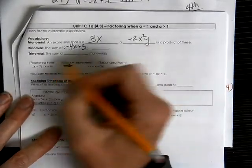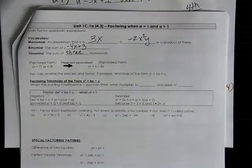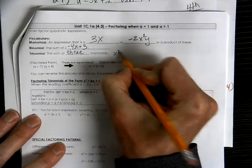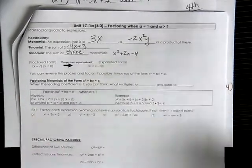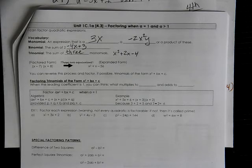A trinomial is the sum of three parts, three monomials. Like maybe x squared plus 2x minus 4. That could be considered a trinomial because it's made up of three different parts.